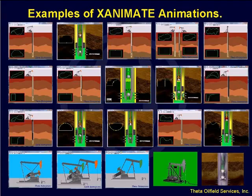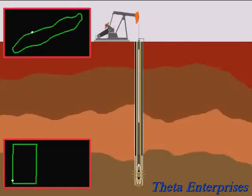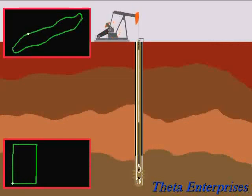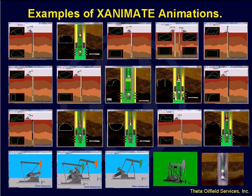Going back to the previous animation where we had under-travel, you can see it goes a lot slower because it only has to cover a small distance. The well depth was about 8,000 feet.